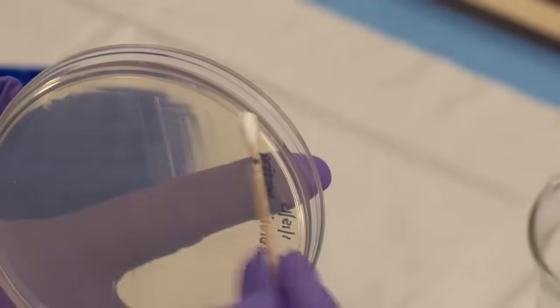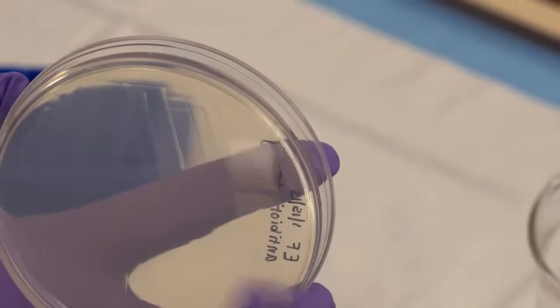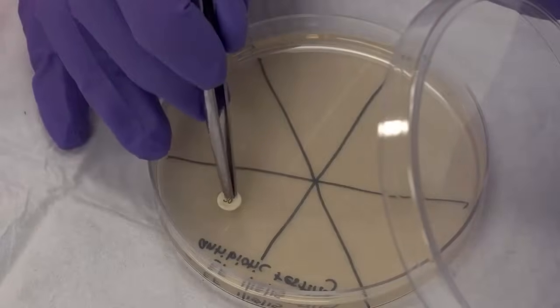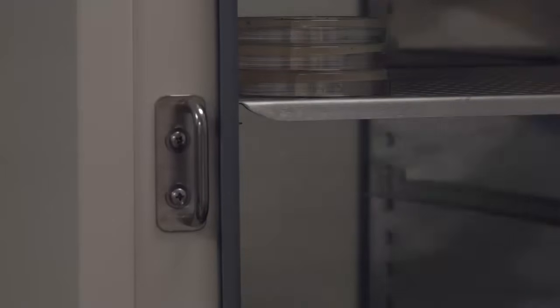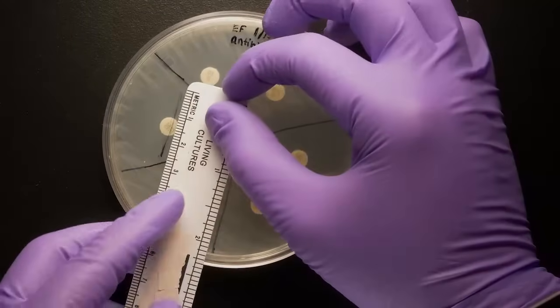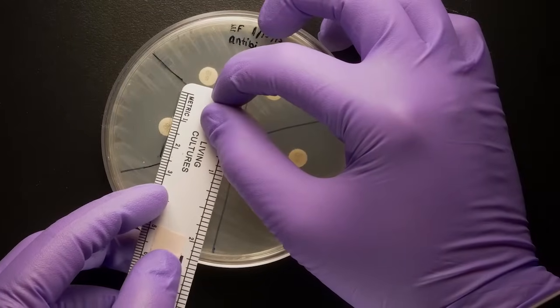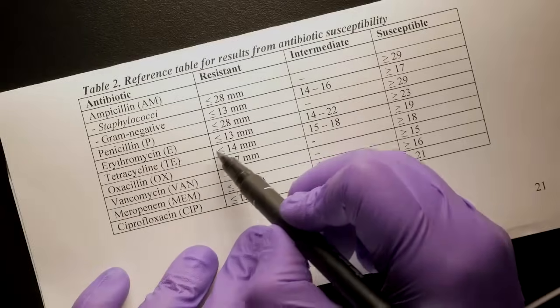Let's review the Kirby Bauer antibiotic sensitivity assay. Plate a lawn. Place antibiotic discs. Grow the bacteria. Measure the diameter of the zone of inhibition. And refer to the reference table. And that's it.